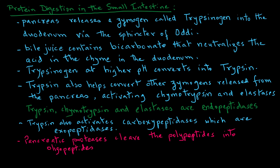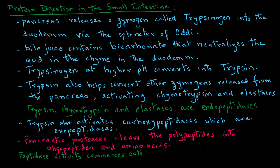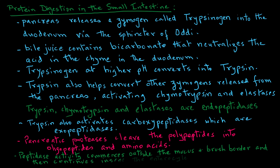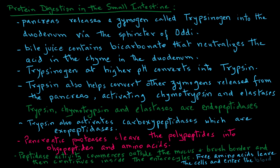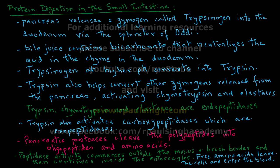The pancreatic proteases cleave the polypeptides into oligopeptides and amino acids. The peptidase activity commences outside the mucus and the brush border, then continues inside the enterocytes. Free amino acids then leave the cells and enter the bloodstream. In summary, we have looked at protein digestion and the role of pepsin in the stomach and trypsin in the small intestines.